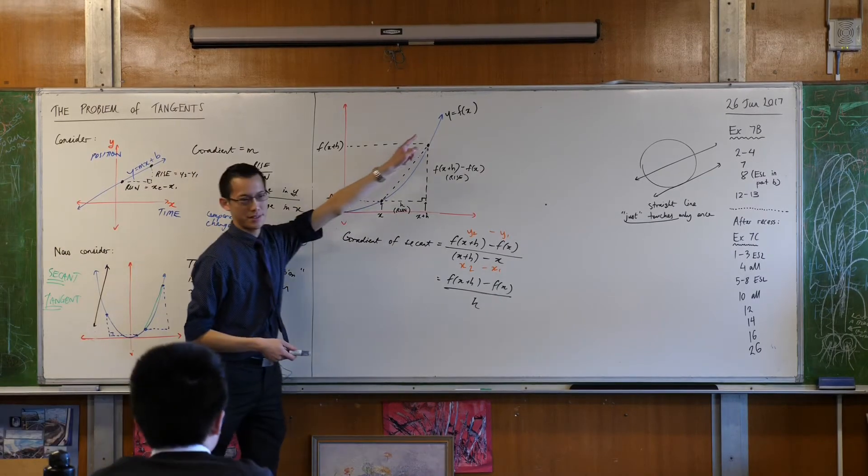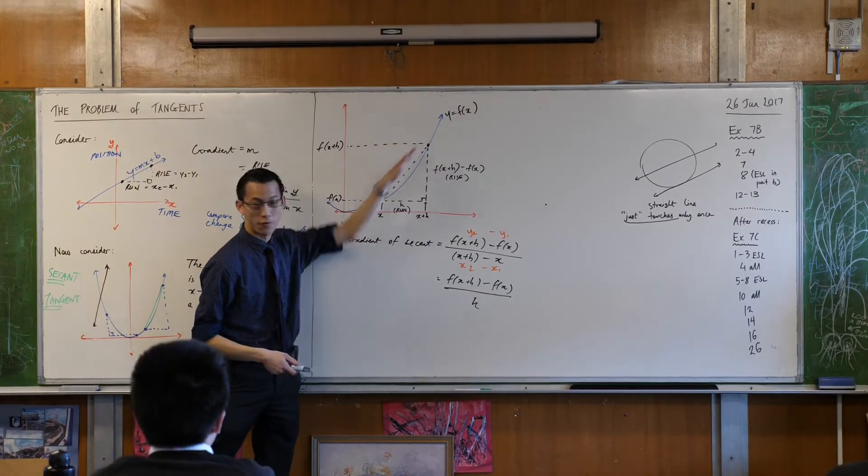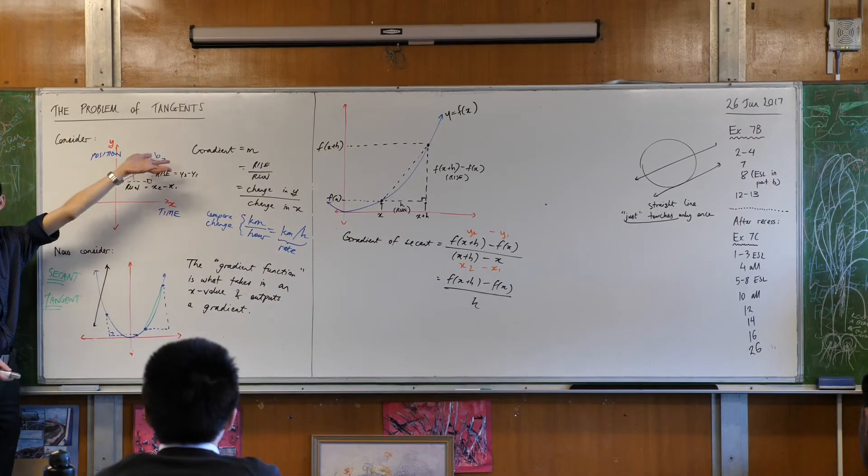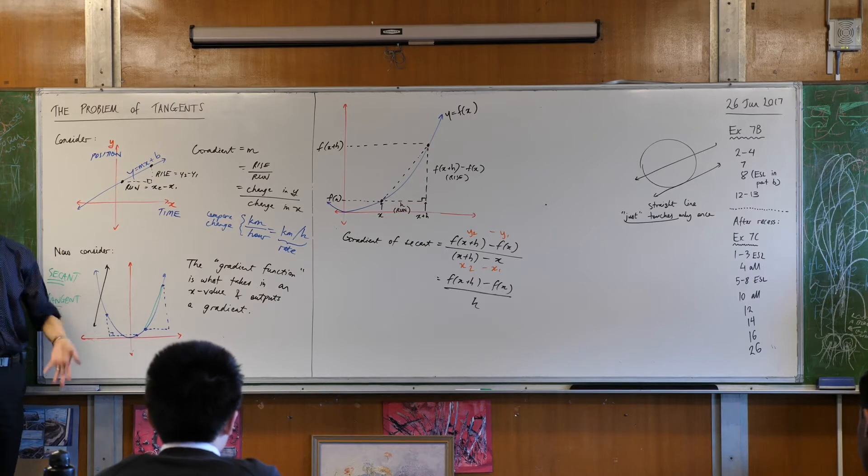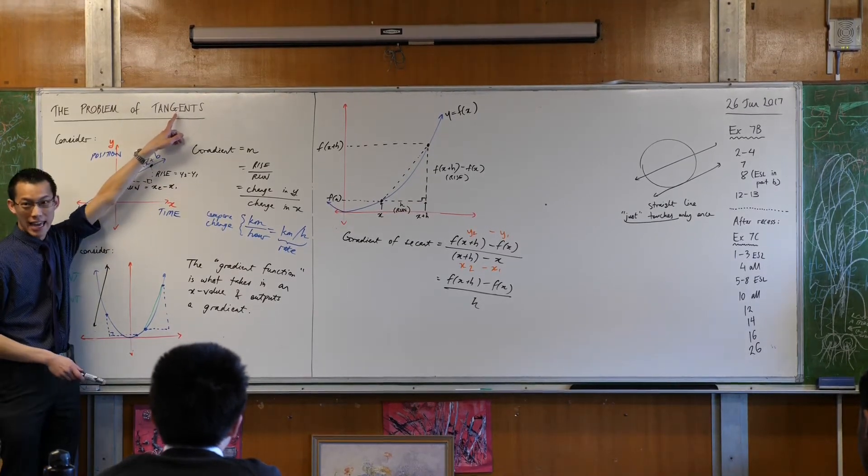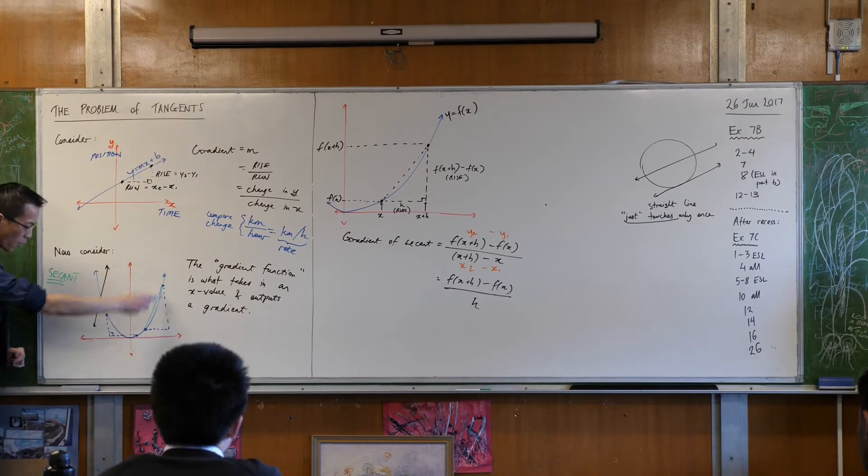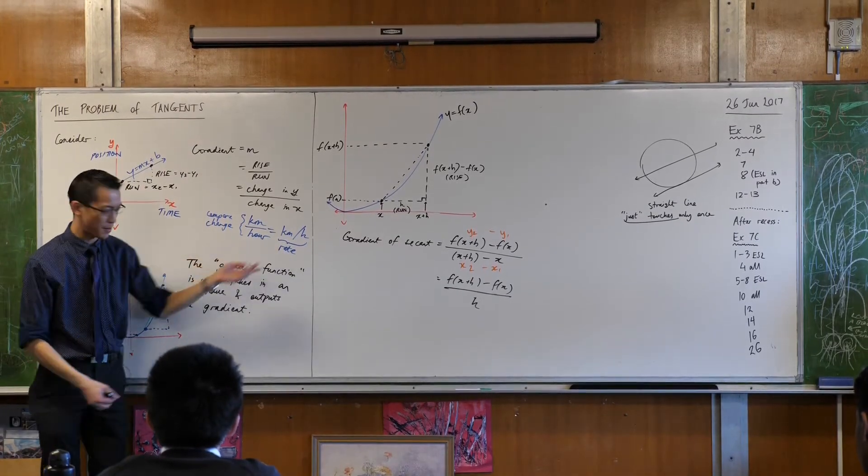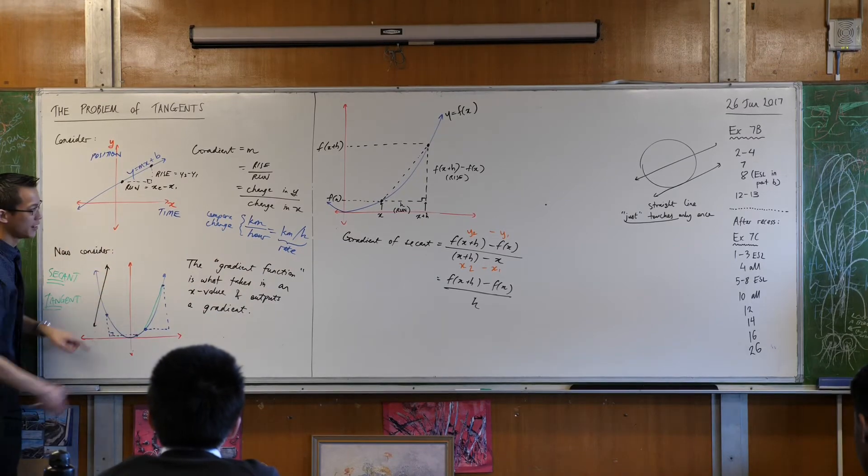Well, if you've got two points, they cut across your function like this, and you can find out its gradient easily enough, just like we did before. But I'm not interested in the gradient of a secant. What I really want is the gradient of a tangent, because then I can know what is the gradient at any particular point.